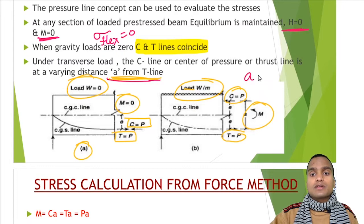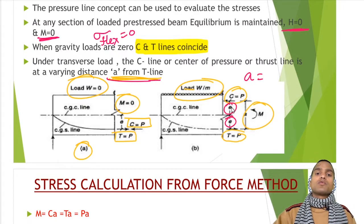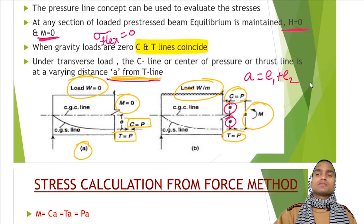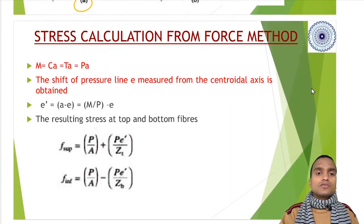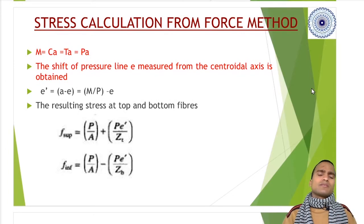That distance is a. Distance a is the sum of both distances - a1 plus a2.